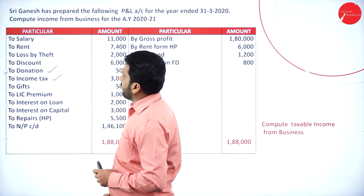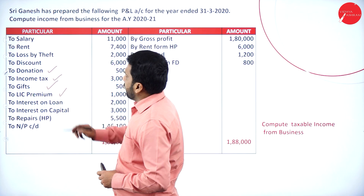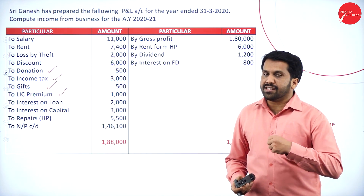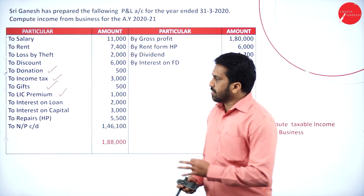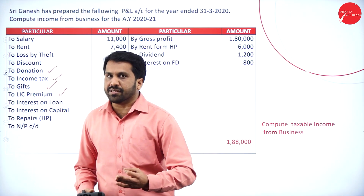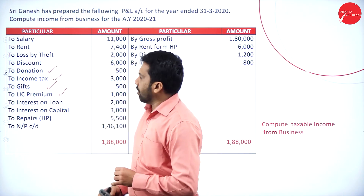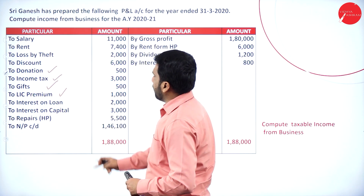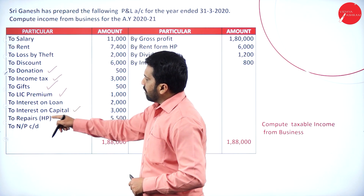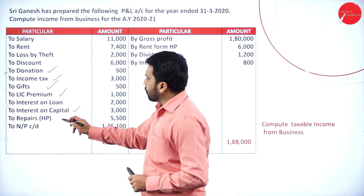Income tax — yes, it is not a business item. Gift — yes. LIC premium — yes. Interest on loan: we assume it is taken for business purpose. Unless mentioned otherwise, interest on loan is your business expenditure, so we will not touch it. Interest on capital — yes, it is not a business item. Repairs made for house property — we are supposed to take that.